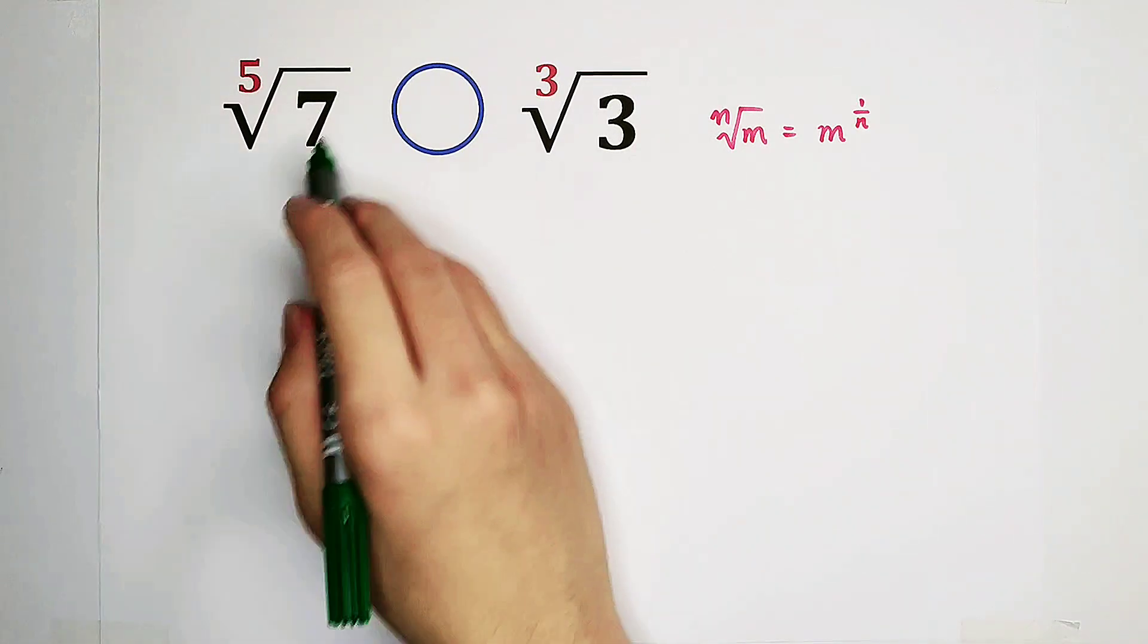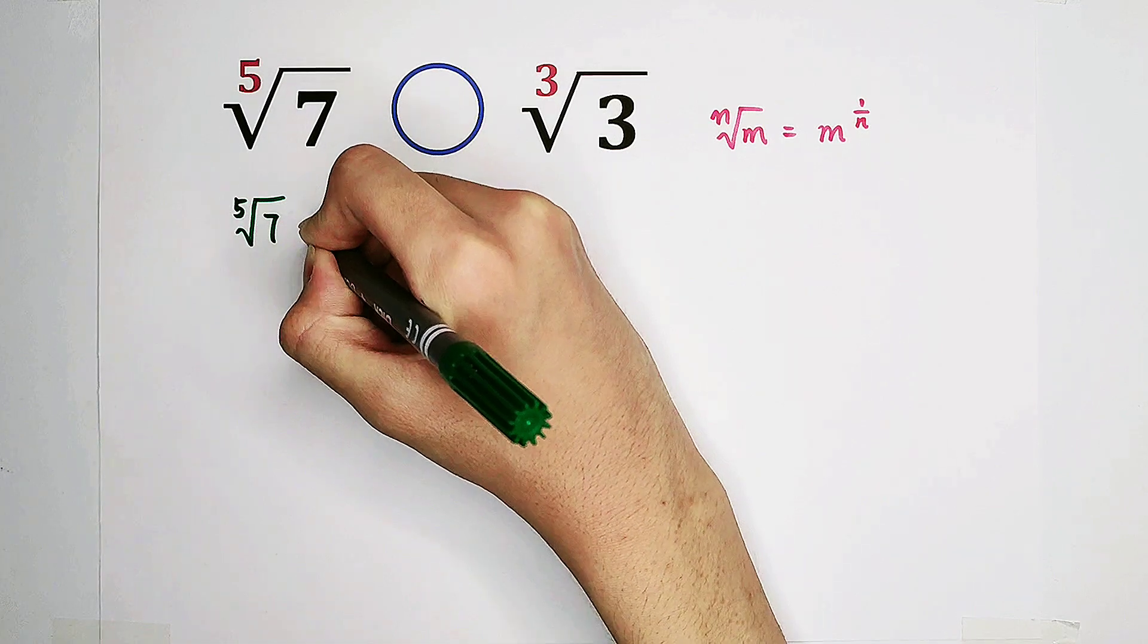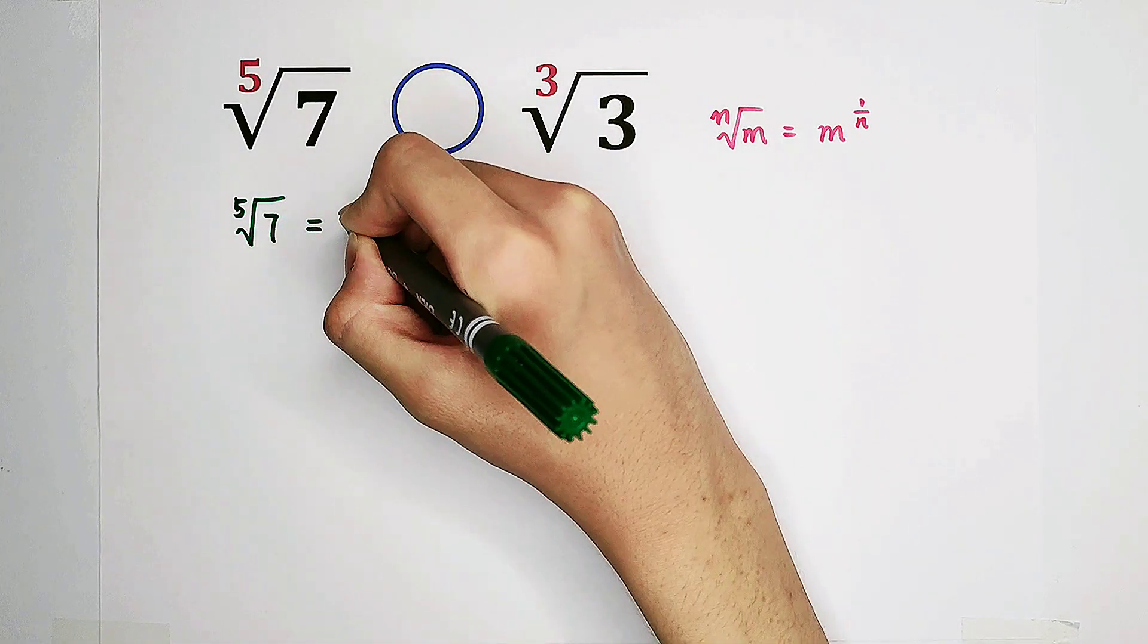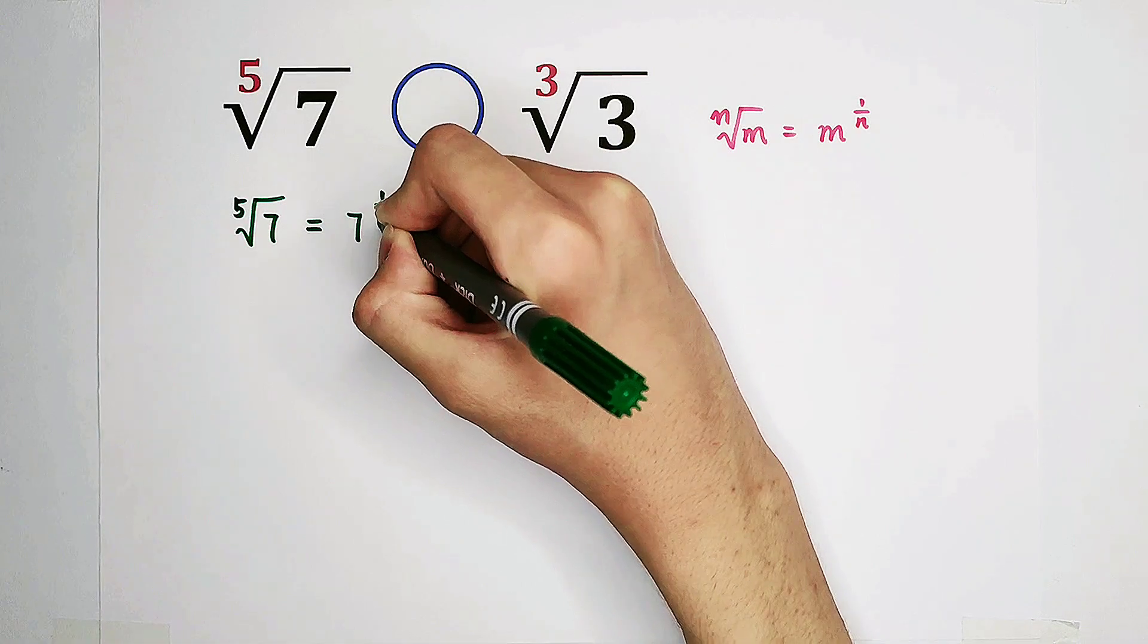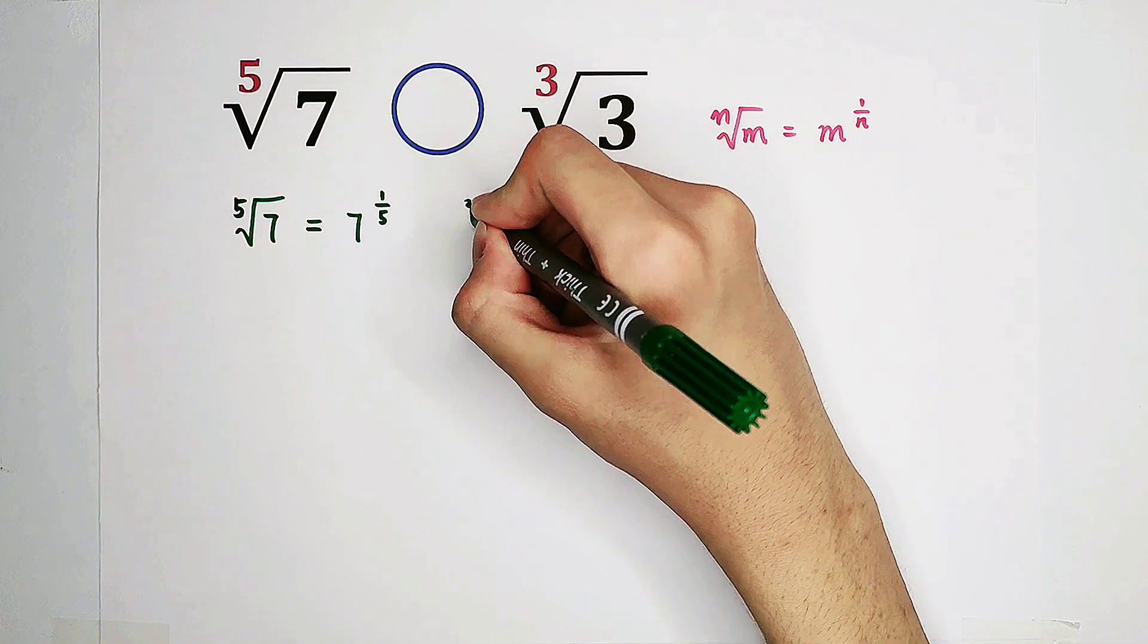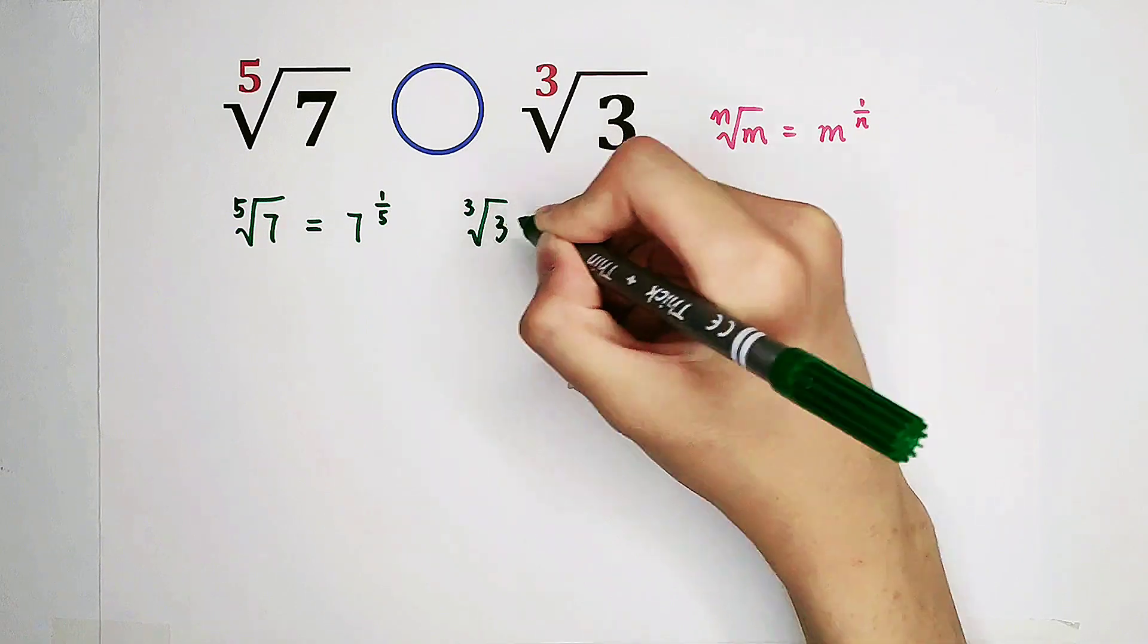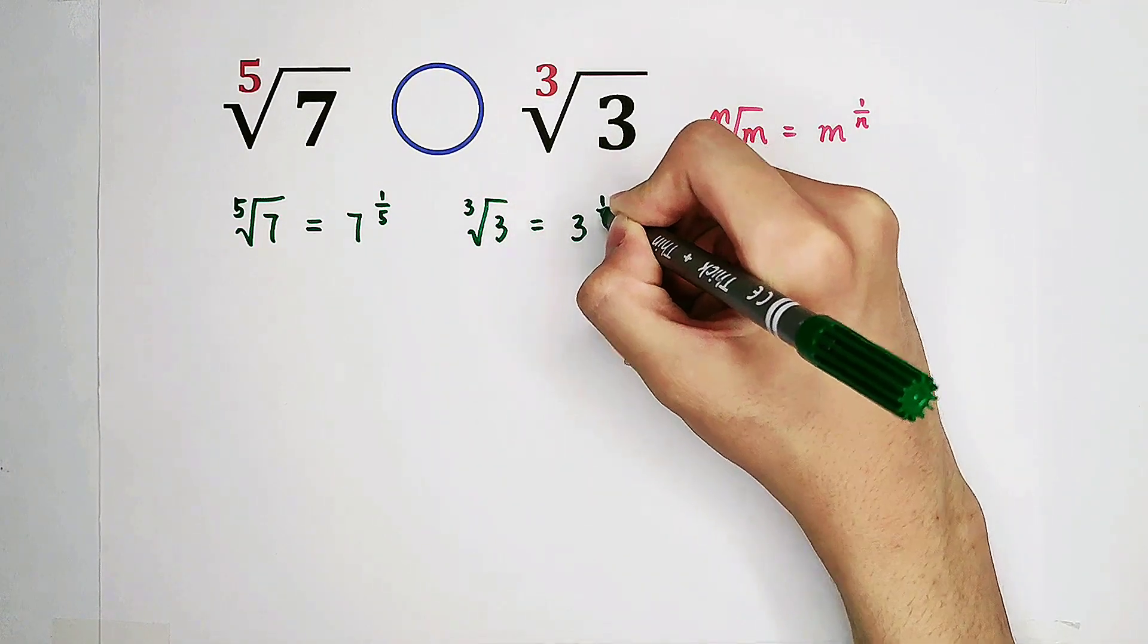The same rule for here. So that means the fifth root of 7 can just be written as 7 to the power of the reciprocal of 5, 1 fifth. And the third root of 3 is 3 to the power of 1 third.